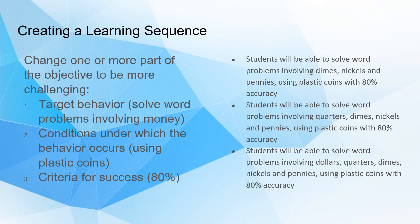In the third lesson, students solve word problems involving dollars, quarters, dimes, nickels, and pennies. The plastic coins and accuracy criteria stay the same — only the target behavior changed. Alternatively, you could keep dimes, nickels, and pennies throughout but raise the accuracy from 80% in lesson one to 85% in lesson two and 90% in lesson three. You could also change the conditions: lesson one uses plastic coins and counters, lesson two uses only plastic coins, and lesson three uses only a written response. Any one of those three parts can change — that's how you sequence your lessons.